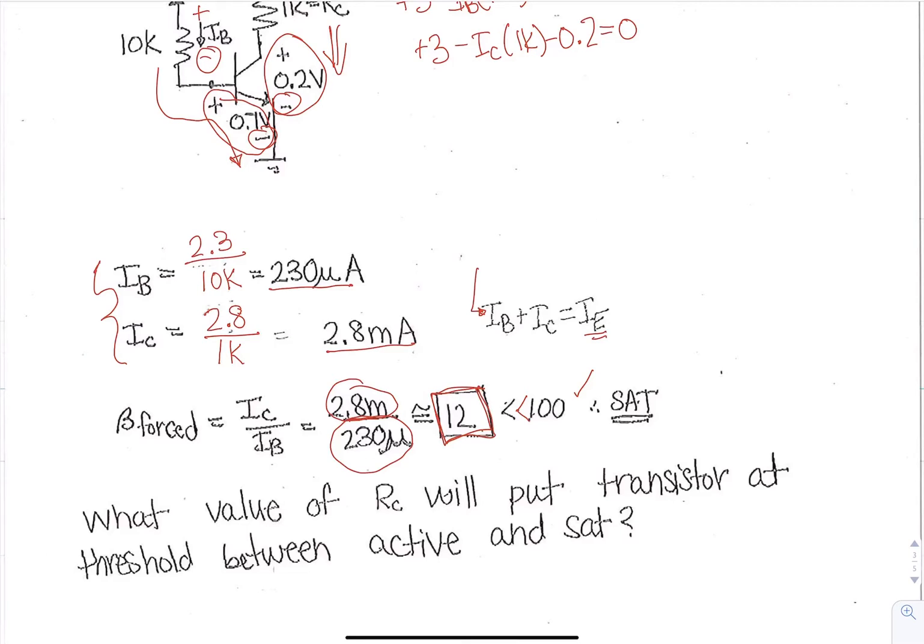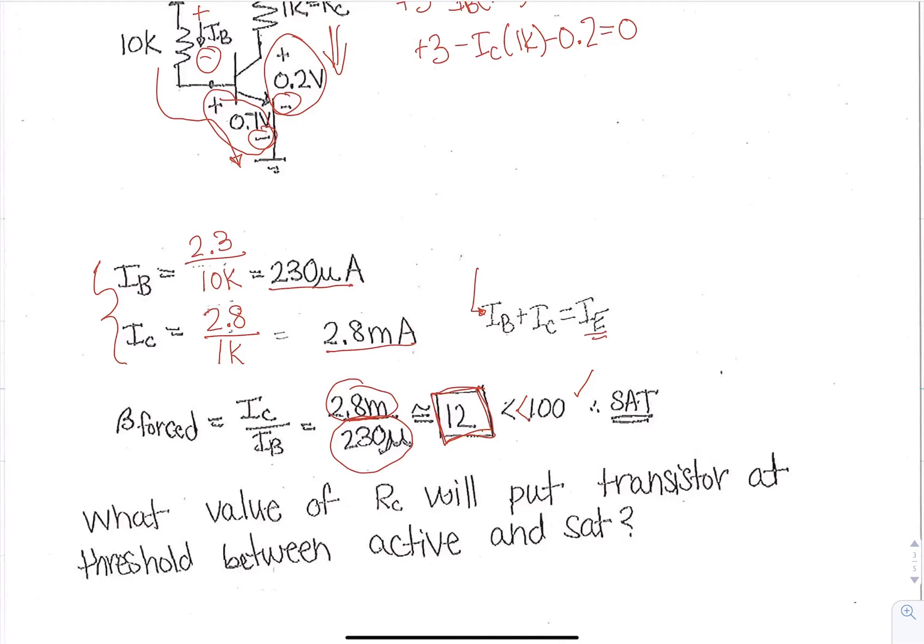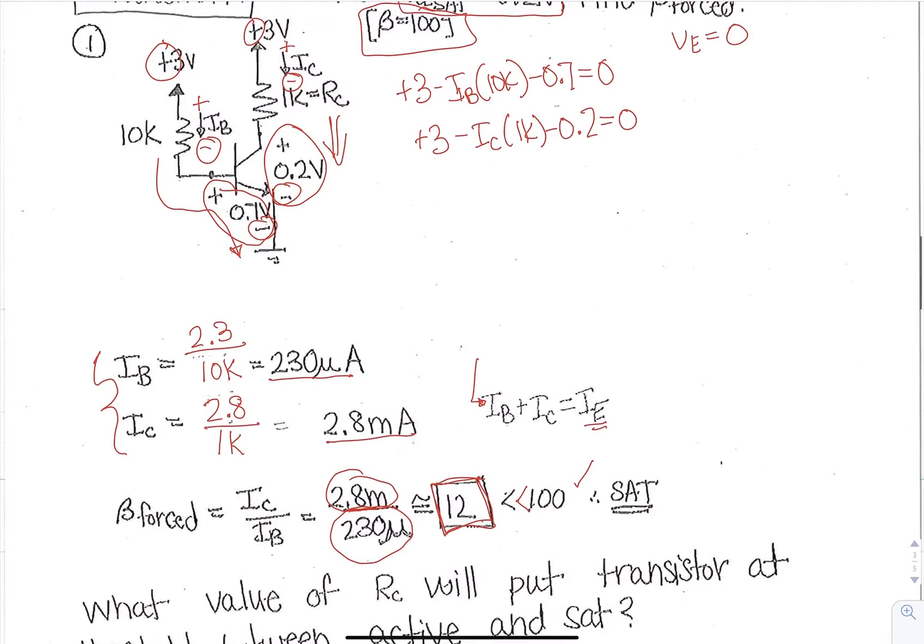So this is another example where we designed this but we thought it was going to be in the active mode. It's not. What condition would we need to change a resistor in here so that we are in the active mode?